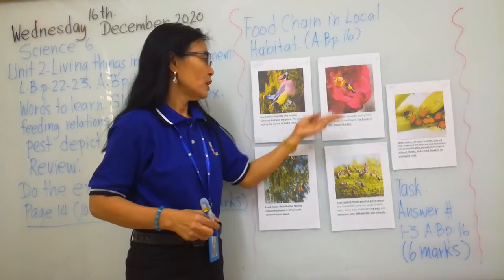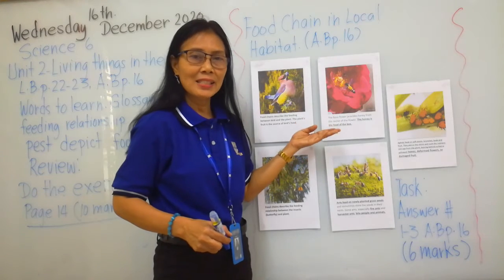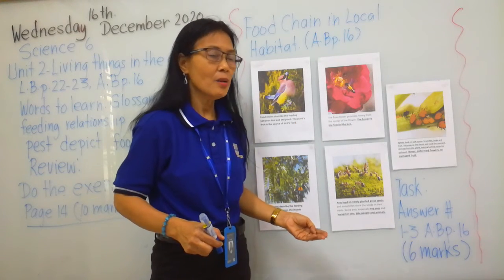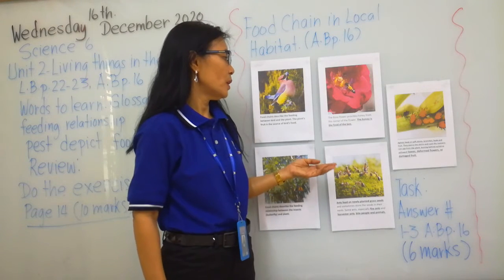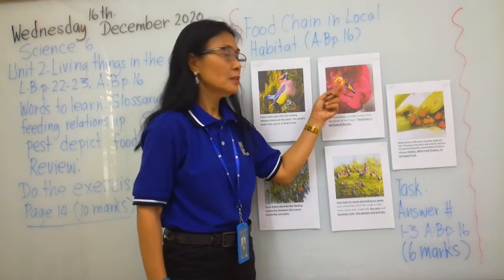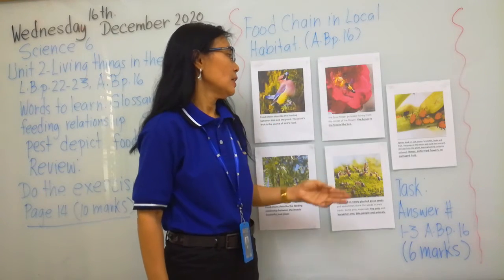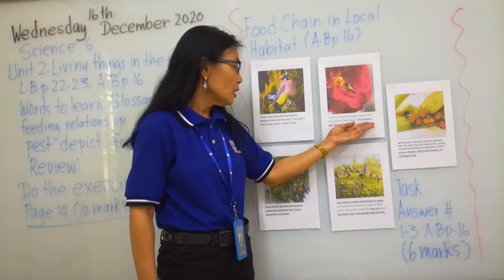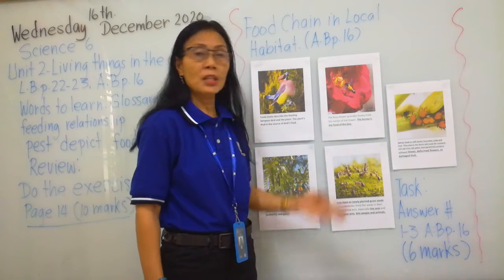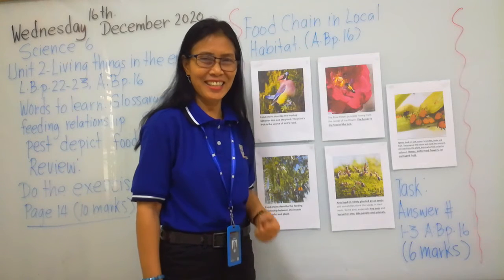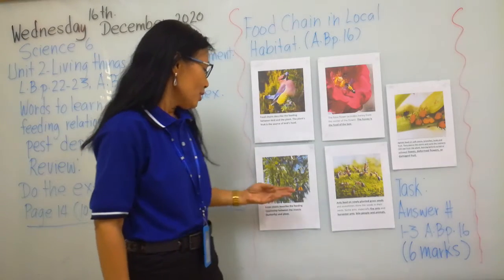In the second picture, there is a rose flower and on the flower are the bees. The rose flower provides honey from the nectar of the flower — the pollen has the nectar on it that the bees sip honey from. So the honey is the food of the bee. Even people use honey as food because it has nutrients that come from the plants.